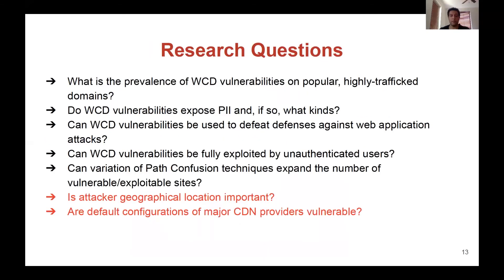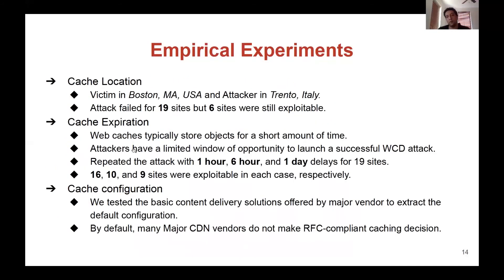We also studied some side channels related to web cache deception. For example, to answer whether attacker location matters, we selected 19 vulnerable sites and ran an experiment where the attacker was located in Trento, Italy and the victim was in Boston, United States. We noticed that only 6 out of 19 sites were vulnerable, which means that the attacker's location is quite important in web cache deception exploitation.